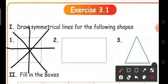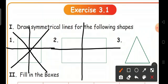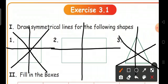And next we can draw two symmetrical lines for the rectangle. One and two. And next we draw the three symmetrical of the equilateral triangle. One and two and three.